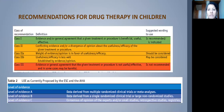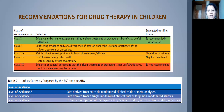Before we talk about recommendations for drug therapy, you need to know the classes of recommendations. Class 1 means there is evidence or general agreement that the treatment is beneficial. Class 2 means there is conflict in evidence or divergent opinion; Class 2a means the weight of evidence favors efficacy, and Class 2b means it is less well established. Class 3 means there is general agreement the drug may not be useful or may even be harmful.